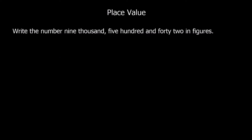Now we're going to look at going from words into figures. We've got: write the number nine thousand, five hundred and forty-two in figures. If we write this down bit by bit — we've got 9000, which is 9 with 3 zeros after it. So we have the thousands column, then the hundreds, then the tens, then the ones.